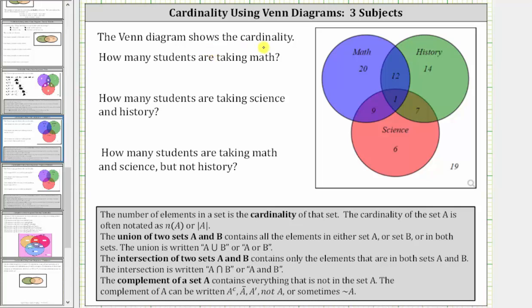The Venn diagram shows the cardinality. The first question is: how many students are taking math? Looking at the Venn diagram, this is the set of students taking math.